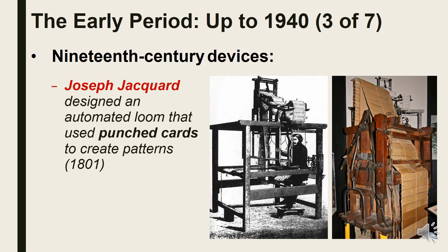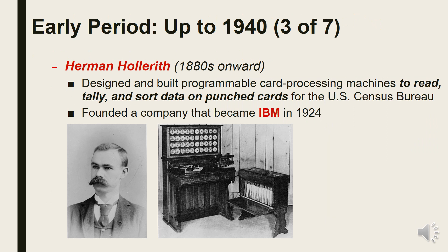On the 19th century, Joseph Jacquard designed an automated loom that used punch cards to create patterns. The Jacquard loom is important to computer history because it is the first machine to use interchangeable punch cards to instruct a machine to perform automated tasks.